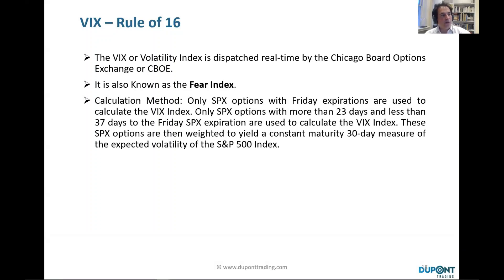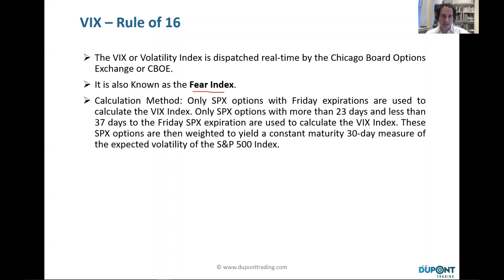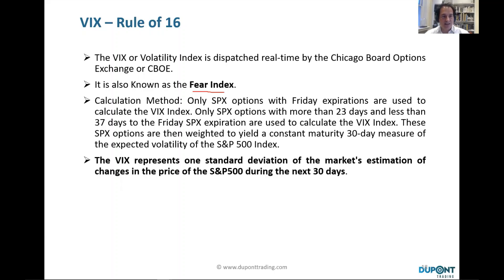The VIX, or Volatility Index of the S&P, is dispatched in real time by the Chicago Board Options Exchange, the CBOE. It's known in the market as the fear index. The way you calculate the VIX is by taking different tranches of options between 23 and 37 days to S&P expiration, which gives you a level of implied volatility for the next 30 days.